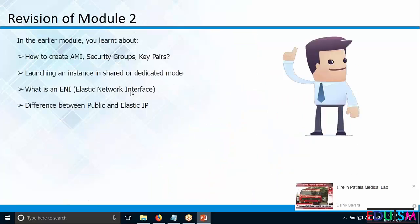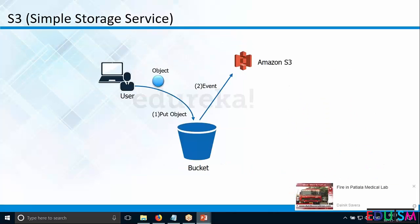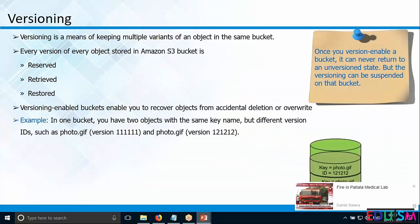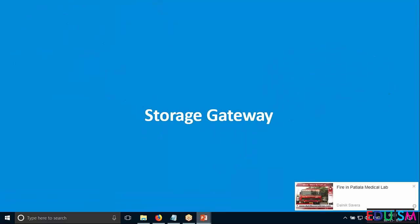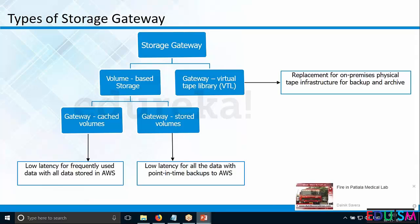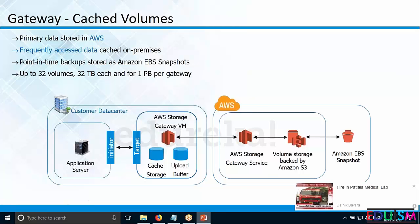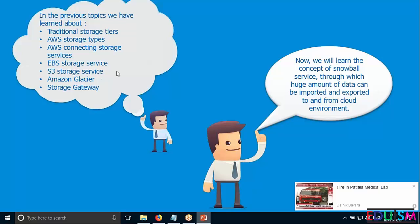After Glacier, we looked into AWS Storage Gateway, which covers hybrid cloud scenarios where some data resides in the data center. We discussed two options: first, cached gateway, where the entire data is stored on S3 and only frequently accessed data is kept in the data center cache; second, upload buffer, where the entire data is uploaded to the data center and then moved to various clients. So we covered upload buffer and cache storage in Storage Gateway.